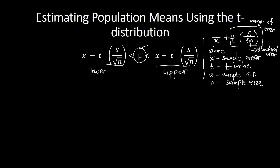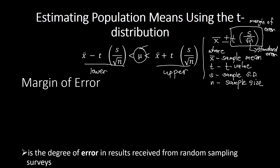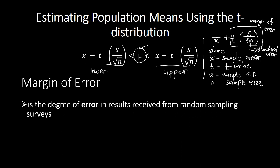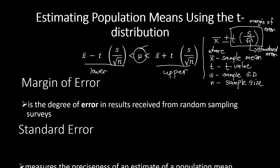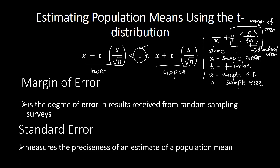The margin of error is the degree of error in results received from a random sampling survey. The standard error measures the preciseness of an estimate of a population mean.